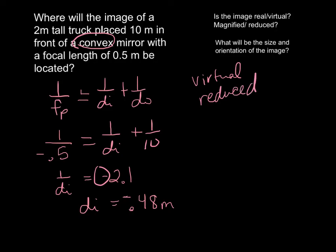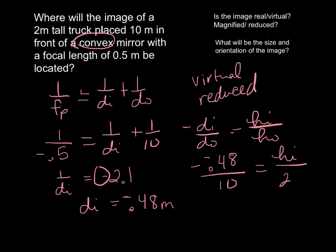We can actually find out how tall that is. Remember I said at the beginning we could use the DI over DO is equal to HI over HO to find out the actual height. We know that it's a negative of a negative 0.48 over 10 is equal to, we don't know HI, that's what we're looking for, over the 2 meters that it originally was. So solving for HI, we get, cross multiply, divide, we get 0.096 meters. So that is much smaller than the original 2 meters of the car, so it does get reduced.